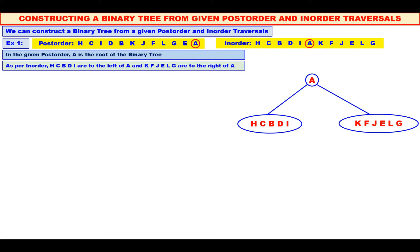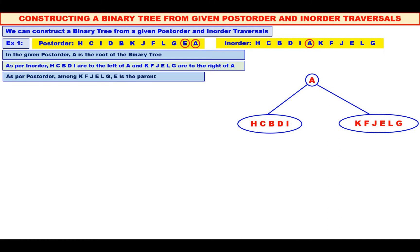Now, since it is post-order, we will consider K, F, J, E, L, G. Among these, which is the root? See the post-order — what is the last one? E. Therefore, E is the parent.